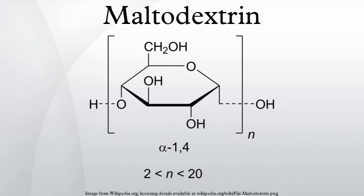Maltodextrin is a polysaccharide that is used as a food additive. It is produced from starch by partial hydrolysis and is usually found as a white hygroscopic spray-dried powder. Maltodextrin is easily digestible, being absorbed as rapidly as glucose, and might be either moderately sweet or almost flavorless.